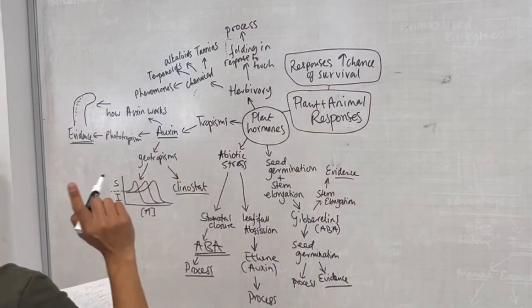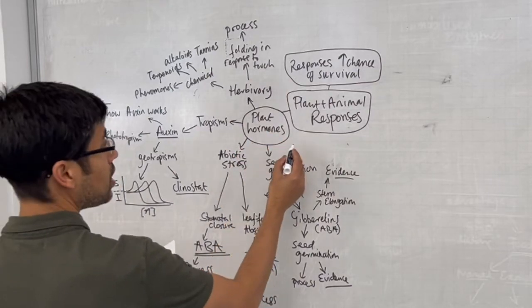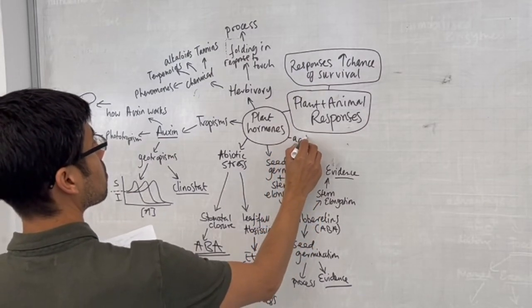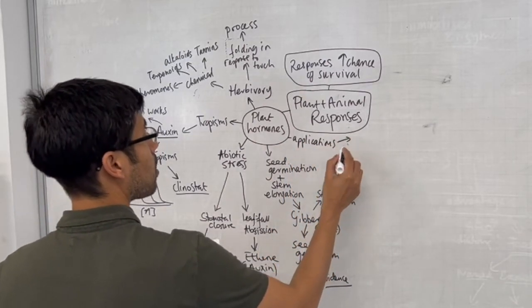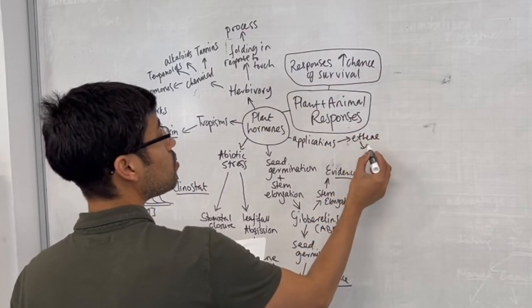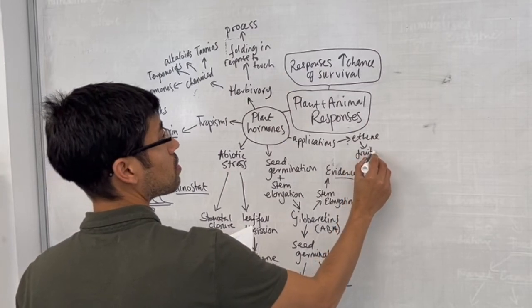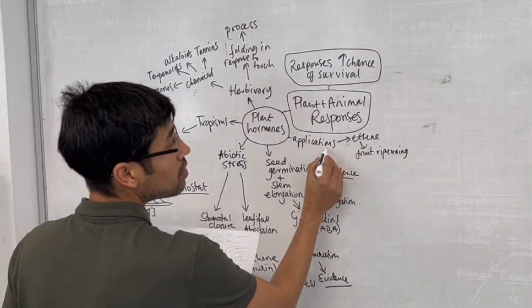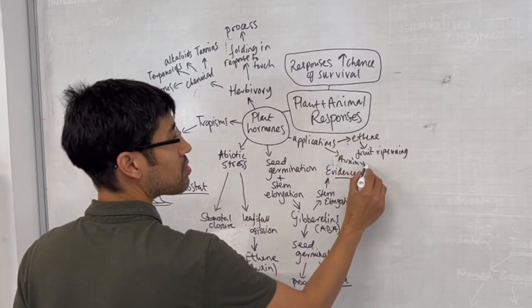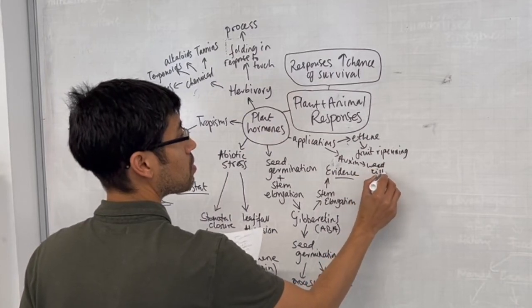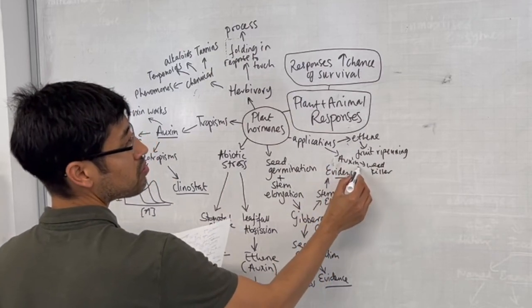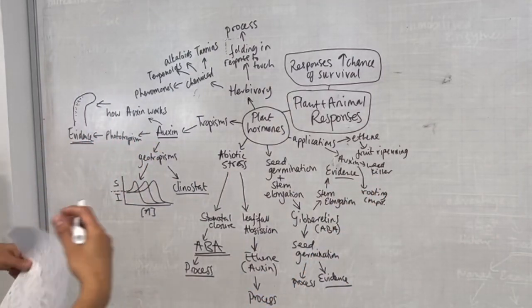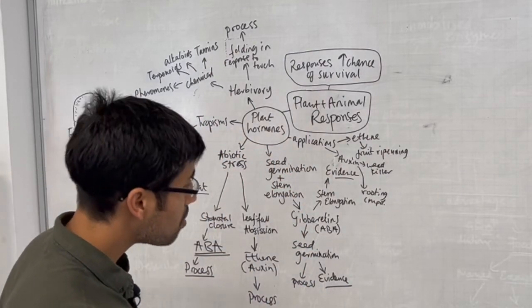Based on that, I'm giving this information. I think that is mostly in terms of plant responses. Only one last thing, which is that plant hormones have applications. For example, ethene is used in fruit ripening. Auxins are used as weed killers, as well as rooting compounds. So with no explanations of anything pretty much, that is the main way I look at it.